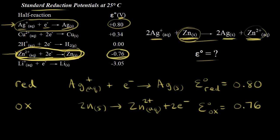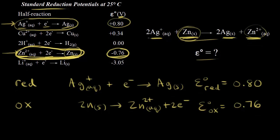Next, we need to look at moles. In our reaction, we have two moles of silver ions being reduced to two moles of solid silver, but our half reaction shows one mole. So we need to multiply everything by two: two moles of silver ions require two moles of electrons to turn into two moles of solid silver. It might be tempting to multiply the reduction potential by two as well, but we don't — voltage is an intensive property. It doesn't matter if you're forming one mole or two moles of silver; the voltage stays at 0.8 volts.